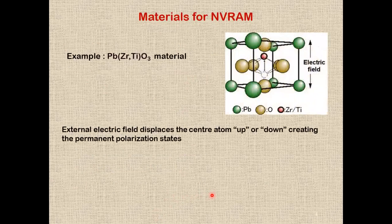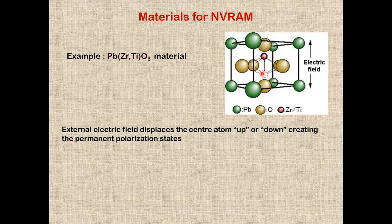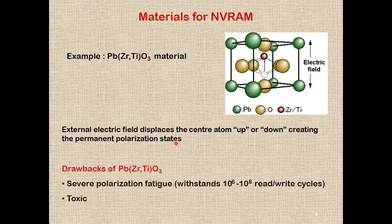One of the classical materials widely used for NVRAM devices was lead zirconate titanate (PZT). The unit cell of PZT has lead atoms at the corners, oxygen ions at the face centers, and either zirconium or titanium at the center. When an external electric field is applied, the central atom is displaced either up or down, creating permanent polarization states. However, this material undergoes severe polarization fatigue — it can withstand only up to 10^6 to 10^8 read/write cycles — and it is also toxic.